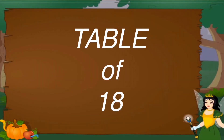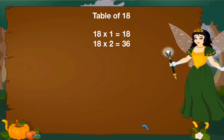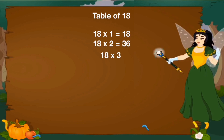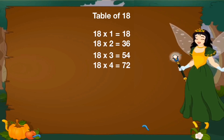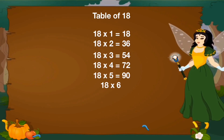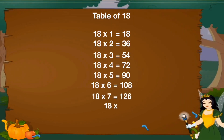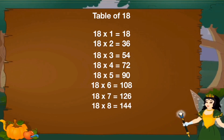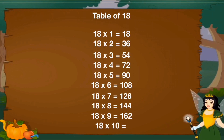Let's revise table of 18. 18 1's are 18, 18 2's are 36, 18 3's are 54, 18 4's are 72, 18 5's are 90, 18 6's are 108, 18 7's are 126, 18 8's are 144, 18 9's are 162, 18 10's are 180.